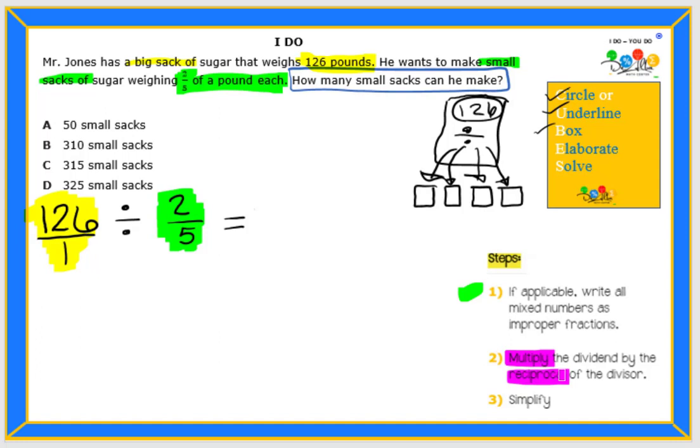The first number that we see in front, that is my dividend. And the number that we are dividing by, that is the divisor because it's doing the dividing. So we are going to keep the 126 over one. That is our dividend. Keep it. But we're going to change to multiplication. We're going to multiply.